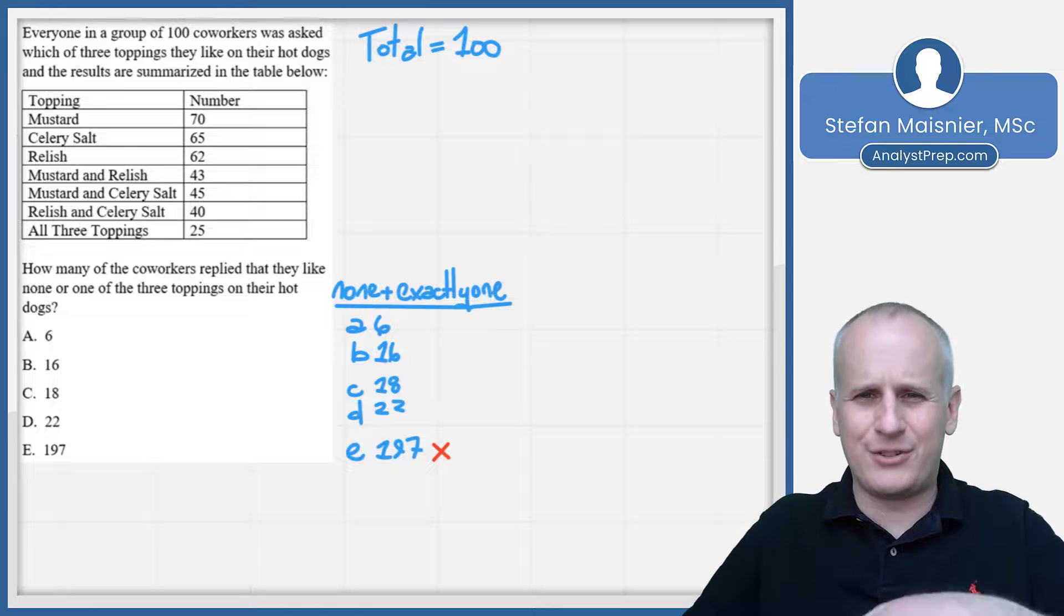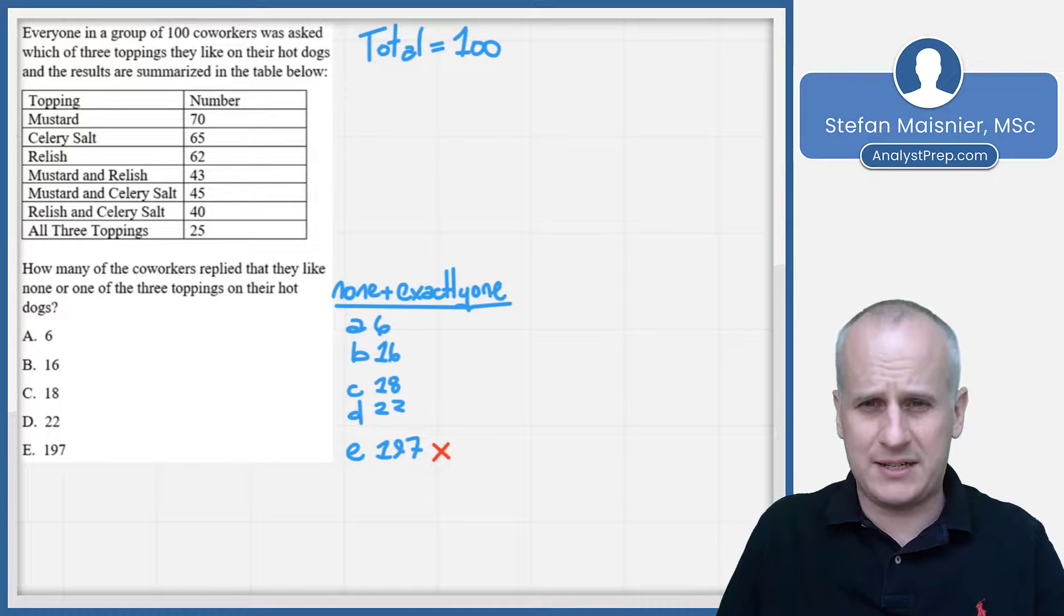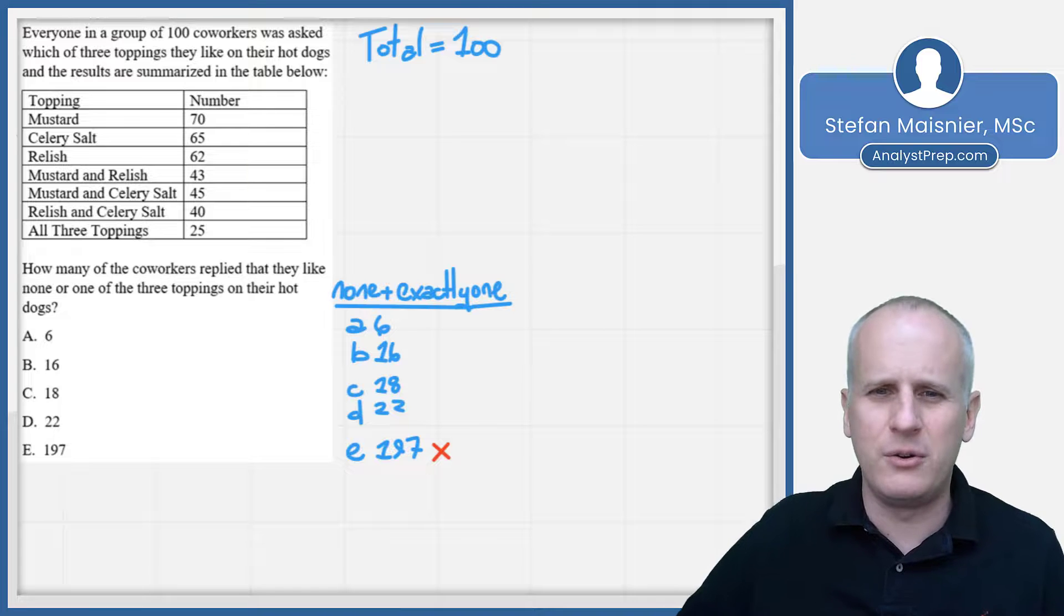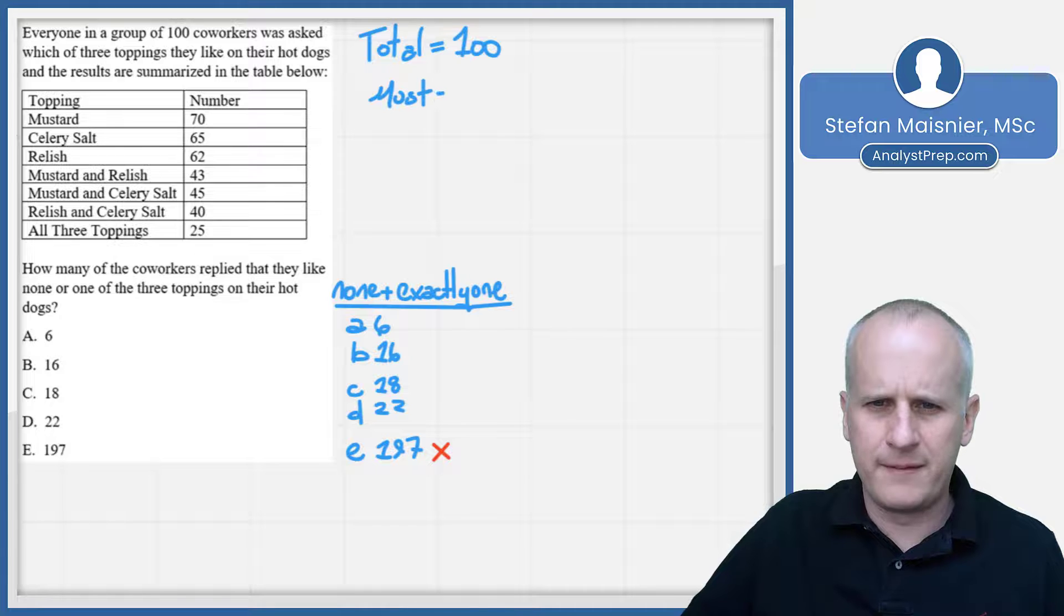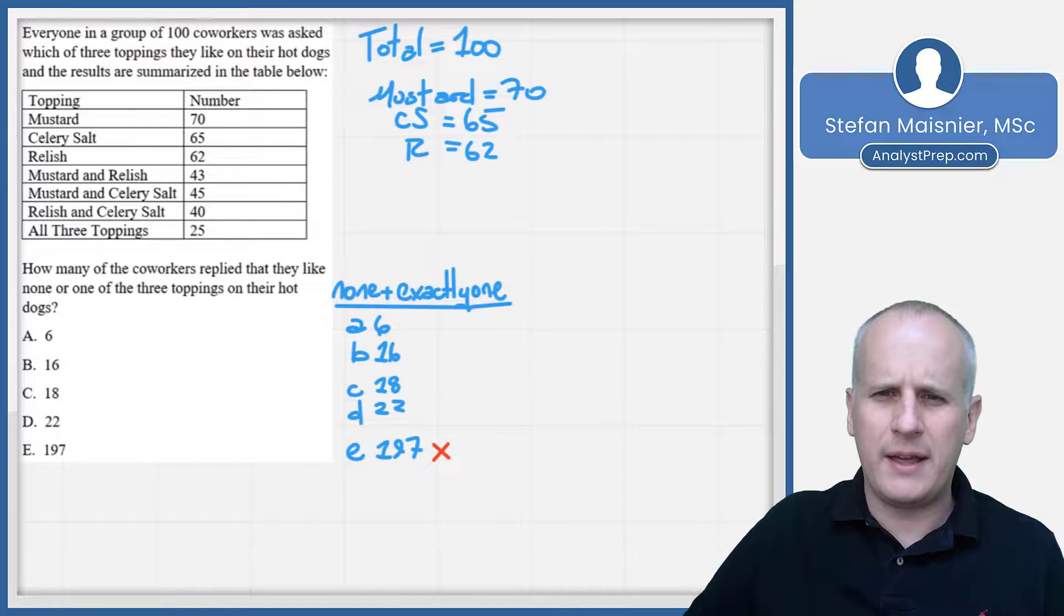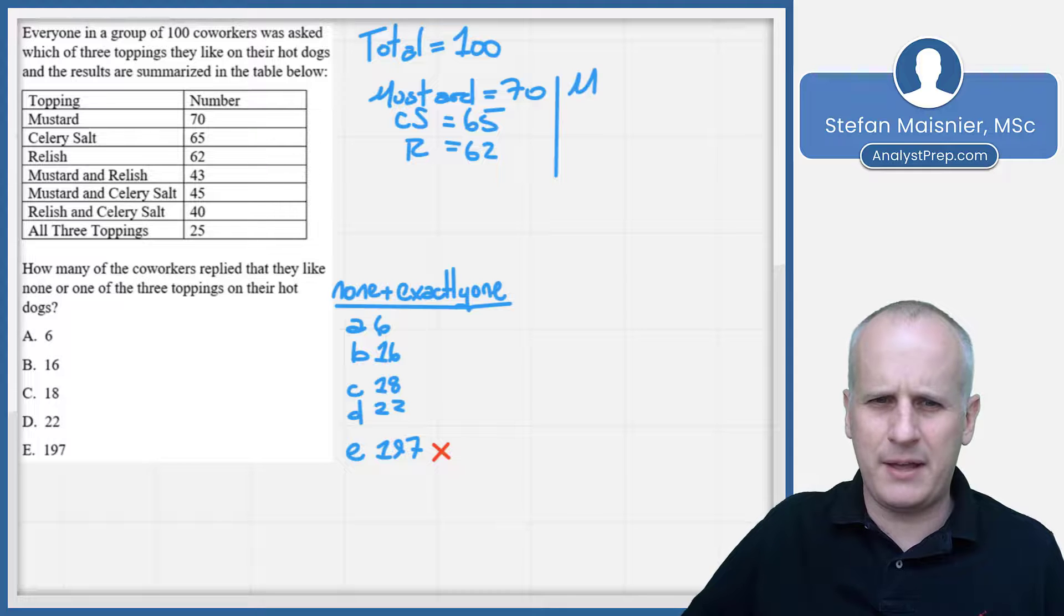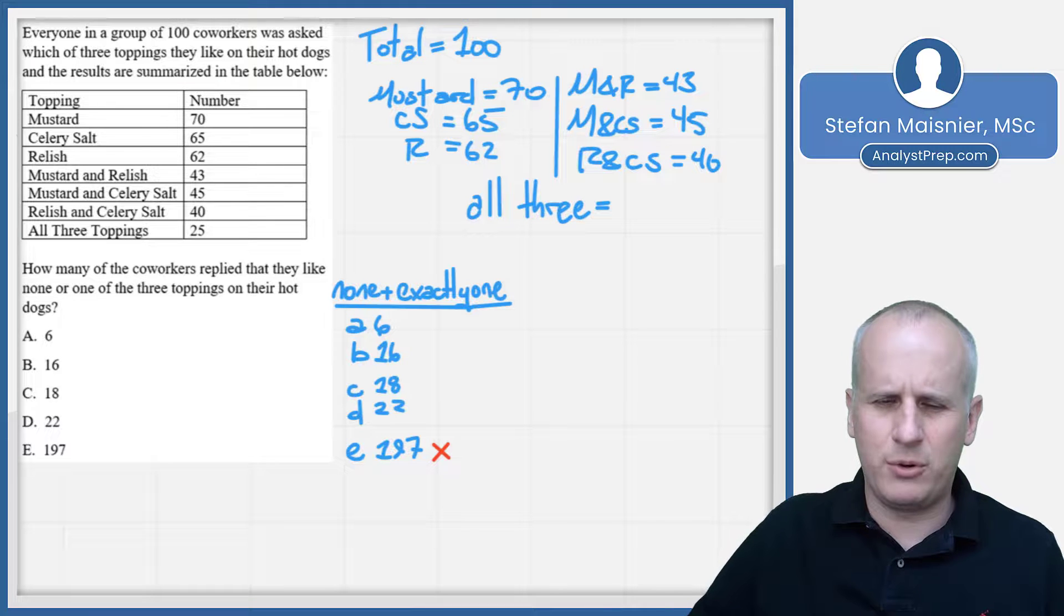You have your discretion to a degree, whether you want to write out these table pieces. I'm inclined to do so because it might help me see what's happening. So we know that mustard is equal to 70. We know that CS for celery salt is equal to 65 and R for relish is equal to 62. And then we've got our combinations. We've got M and R, which is equal to 43. We've got M and CS as an overlap, which is equal to 45. And our R and CS, which is equal to 40. And then we've got our all three, which are equal to 25.